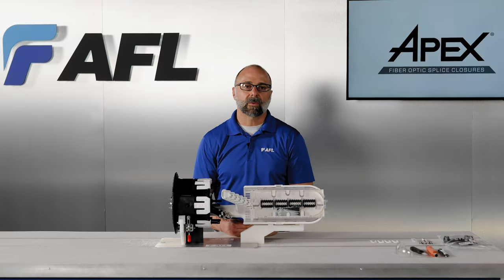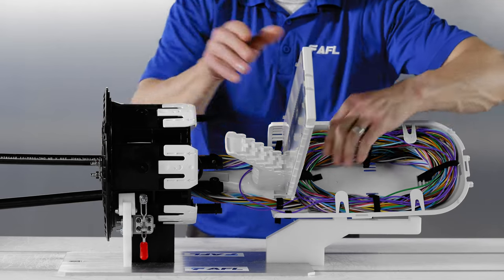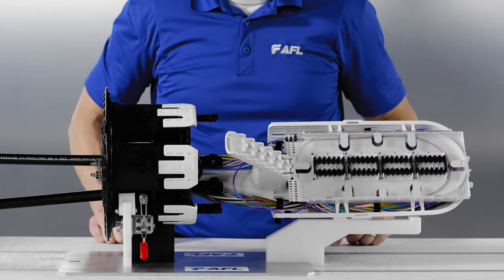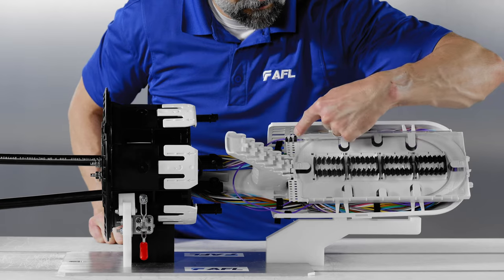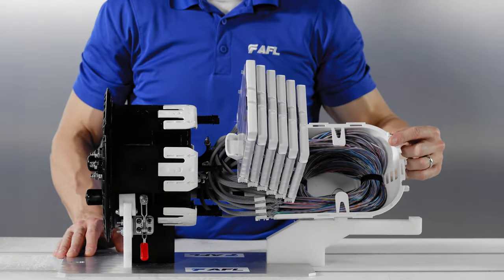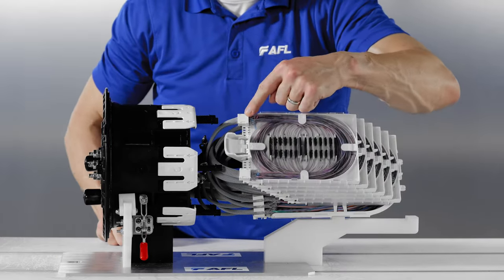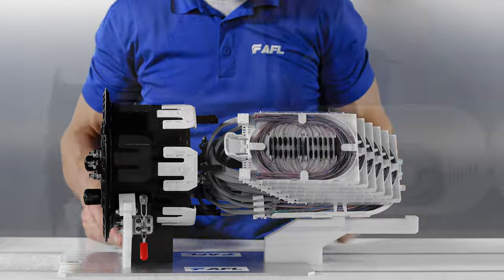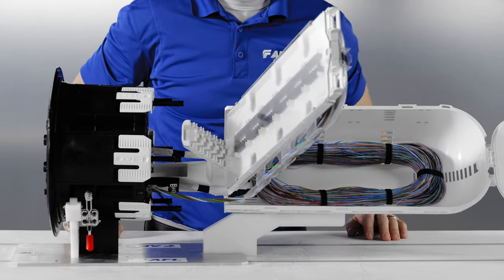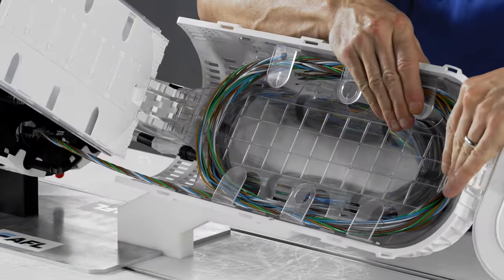Here are some examples of routed Apex closures. Mid-sheath X2 build with 288 loose tube using supplied foam and tie wraps. Butt splice X2 build with 1728 spiderweb ribbon with AFRS ribbon basket and mesh kit. Mid-sheath X3 with 864 spiderweb ribbon and a 48 fiber loose tube cable with inner basket.